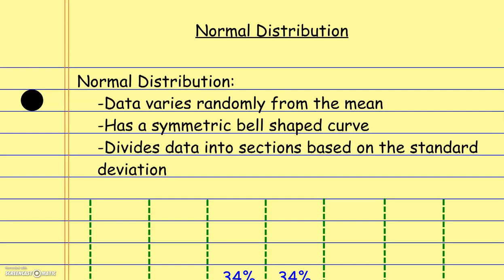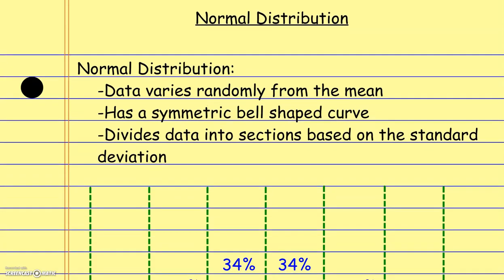A normal distribution curve basically means the data seems to vary from the mean. It's not like there's a set pattern — there's still completely varied randomness to the data as it's spread out from the mean. But what happens is it forms a symmetrical bell curve as we go from the mean and start to measure these different populations.